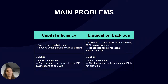I would like to pay your attention to two of them: capital efficiency and liquidation backlog. For those two, Synthetify created a unique solution. We created a function called SwapLine which allows its users to mint stablecoin to synthetic USD in almost a one-to-one ratio, which significantly decreased the capital efficiency problem. The second solution is a security reserve, thanks to which liquidation can be done even if it's not profitable.